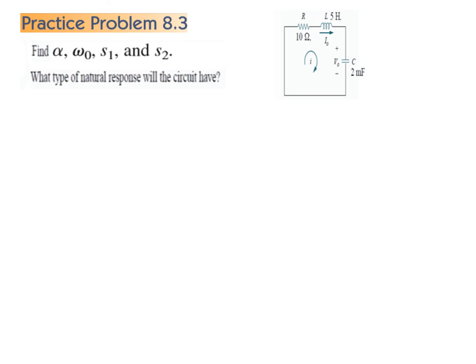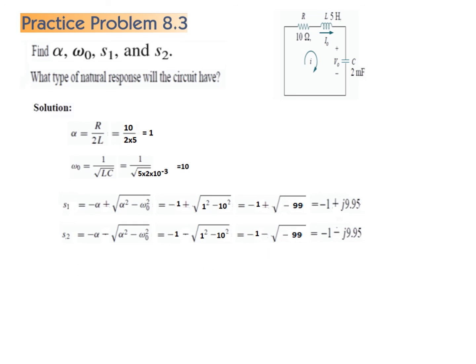For the practice problem with different values, we find α = 1 and ω₀ = 10. Plugging in gives S₁ and S₂ with a J component, meaning they are complex. Since α < ω₀, this is an underdamped case. I hope this gives you a preliminary understanding of the series RLC circuit. Thank you.